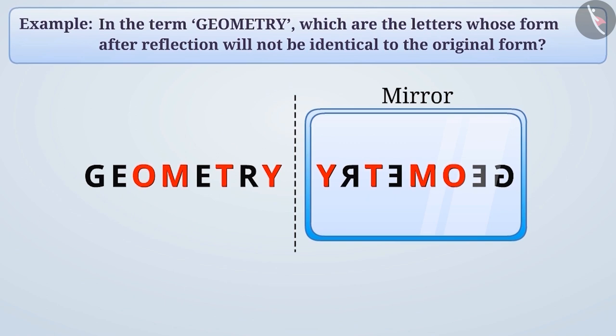But if we talk about the English letters G, E, R, etc., then their right part appears to be left in the reflection and their left part appears to be right in the reflection.